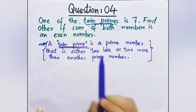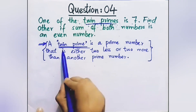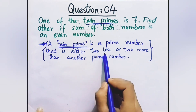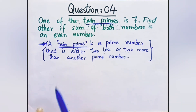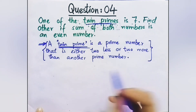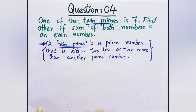A key term used here is twin prime. Let's see what a twin prime is. A twin prime is a prime number that is either two less or two more than another prime number.